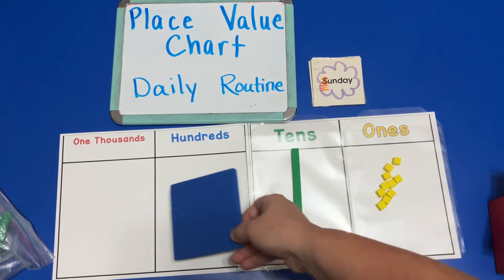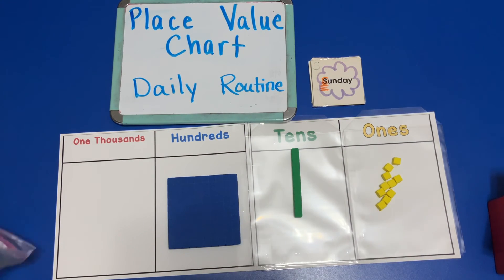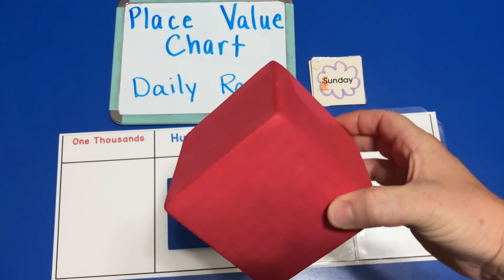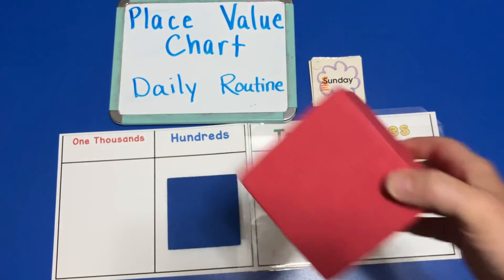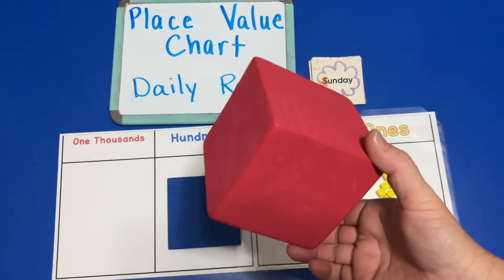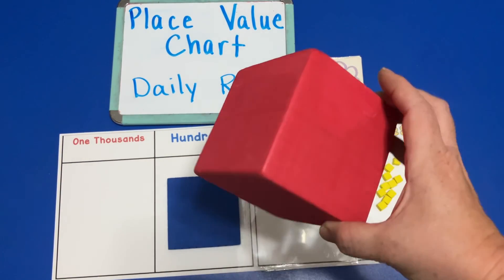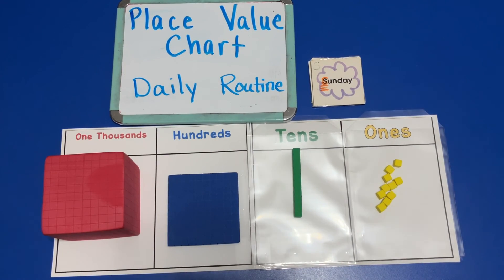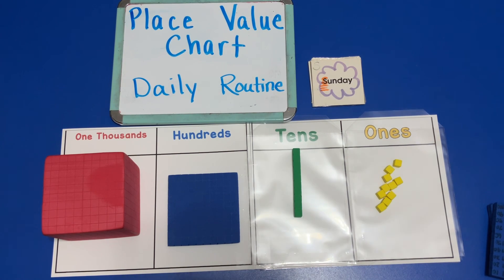If you stacked ten of these hundred blocks together, you would get a thousand. So this is a thousands cube — it would take one thousand of these yellow units to make it. The thousands cube goes in the one thousands place on the place value chart. In my next video, I'll show you what we do with our place value chart in the daily routine.